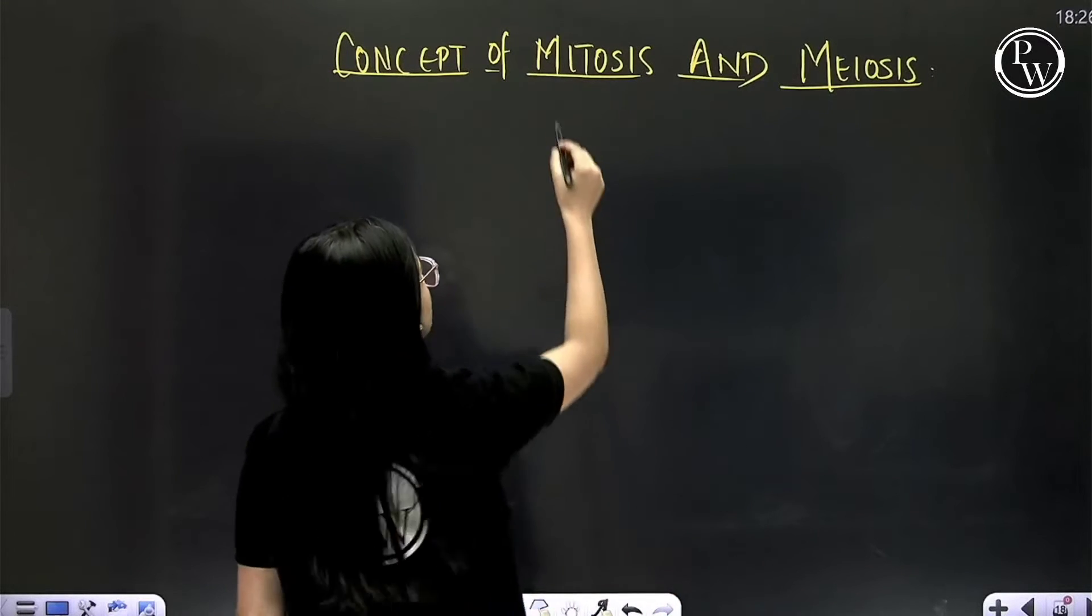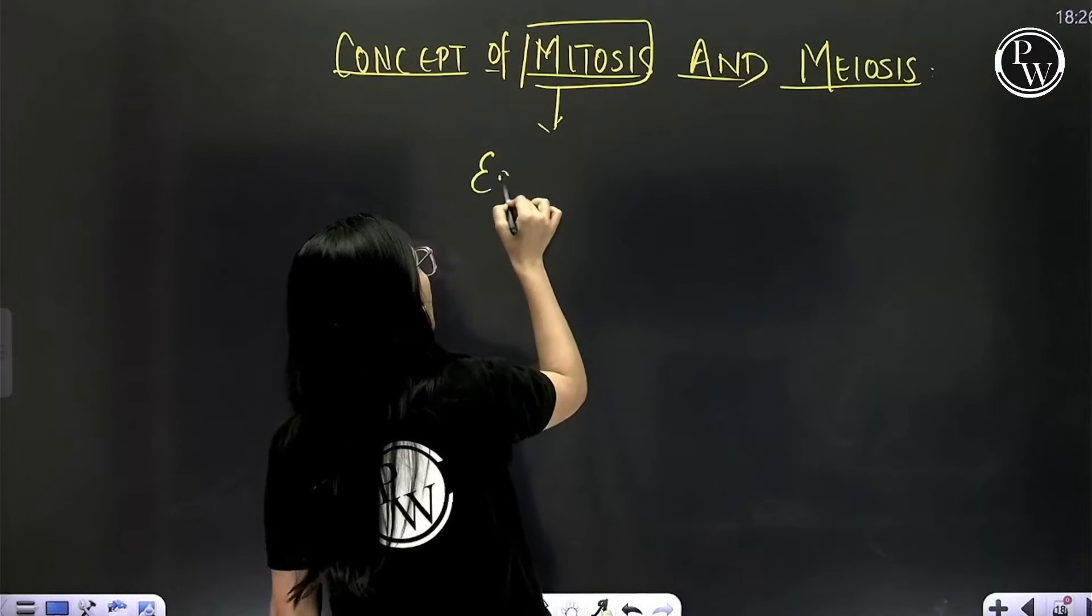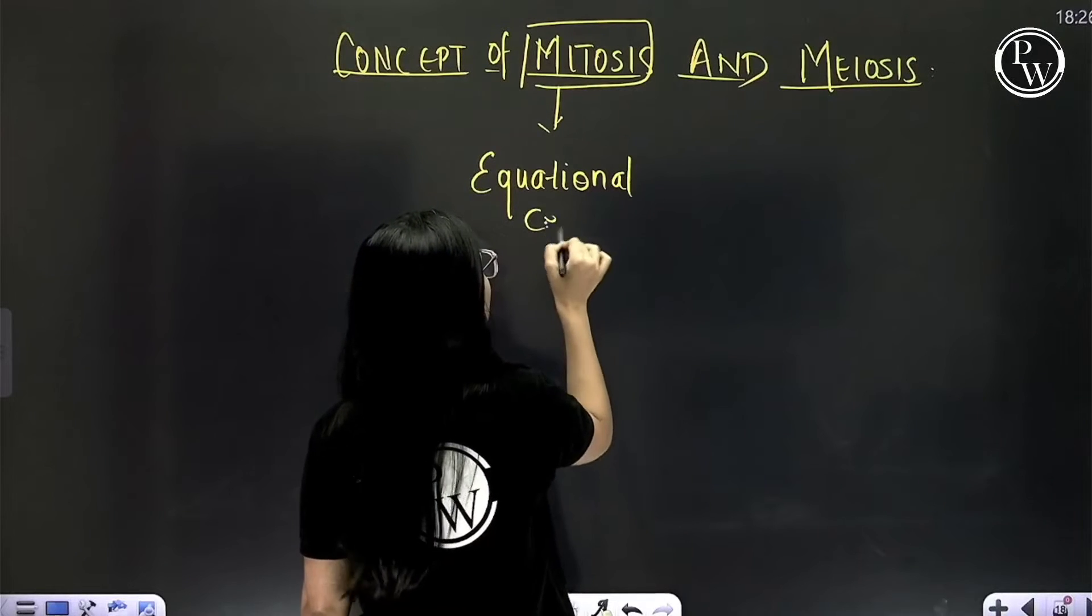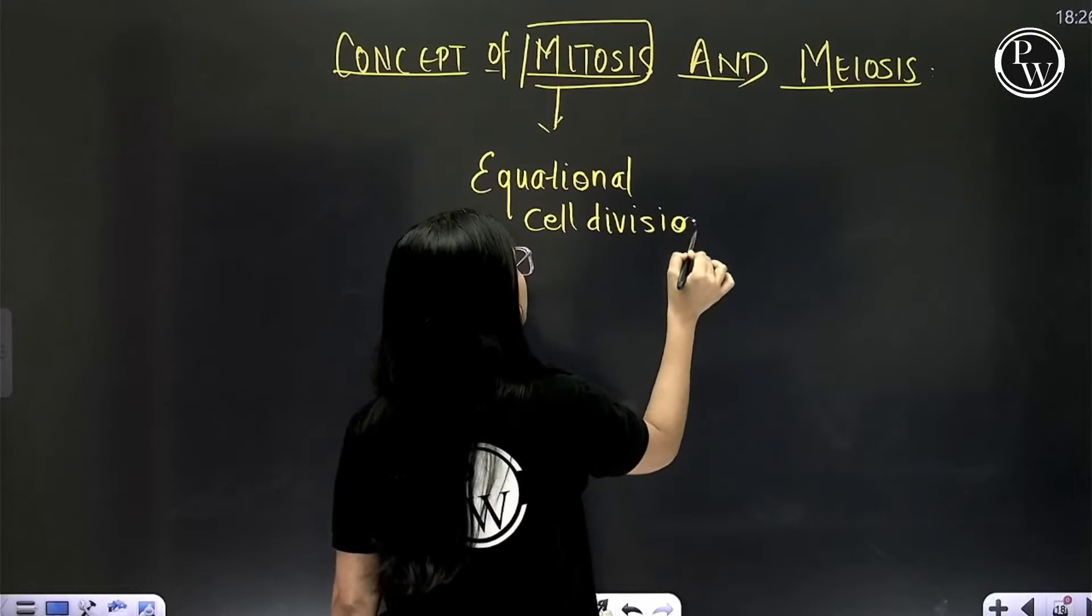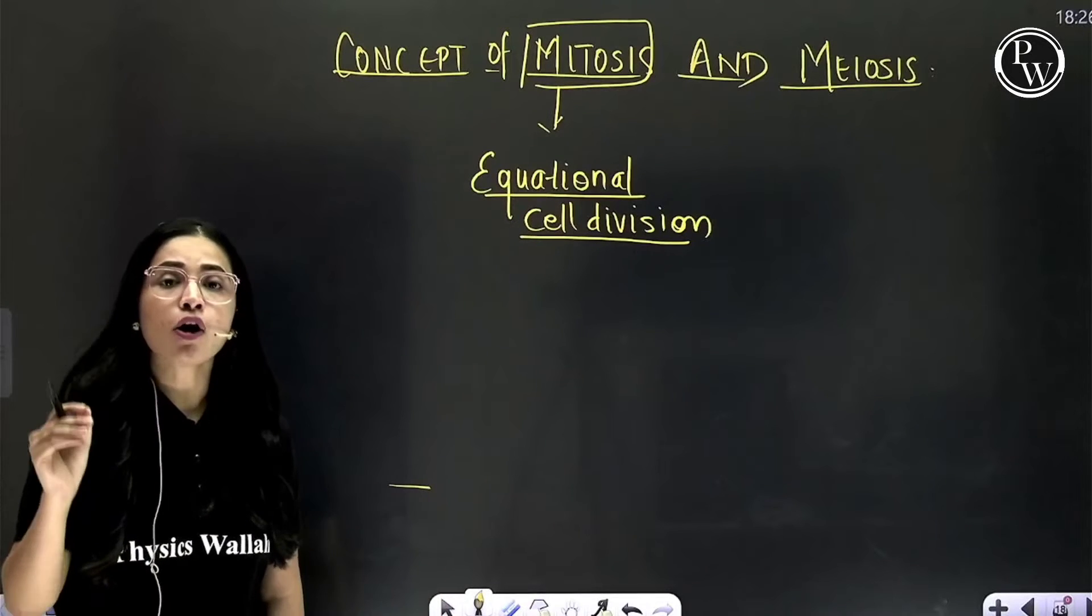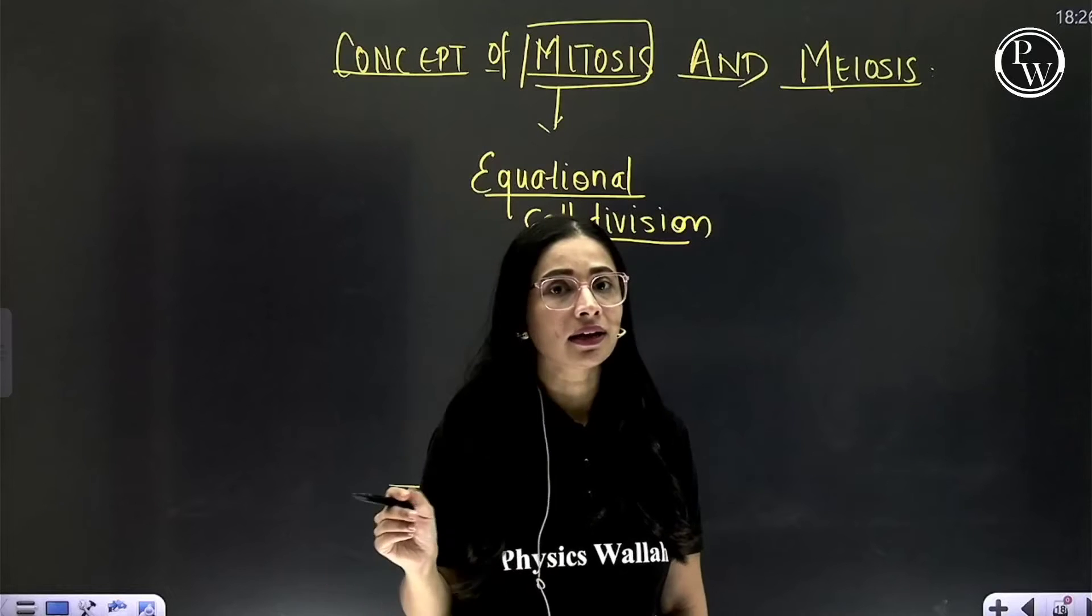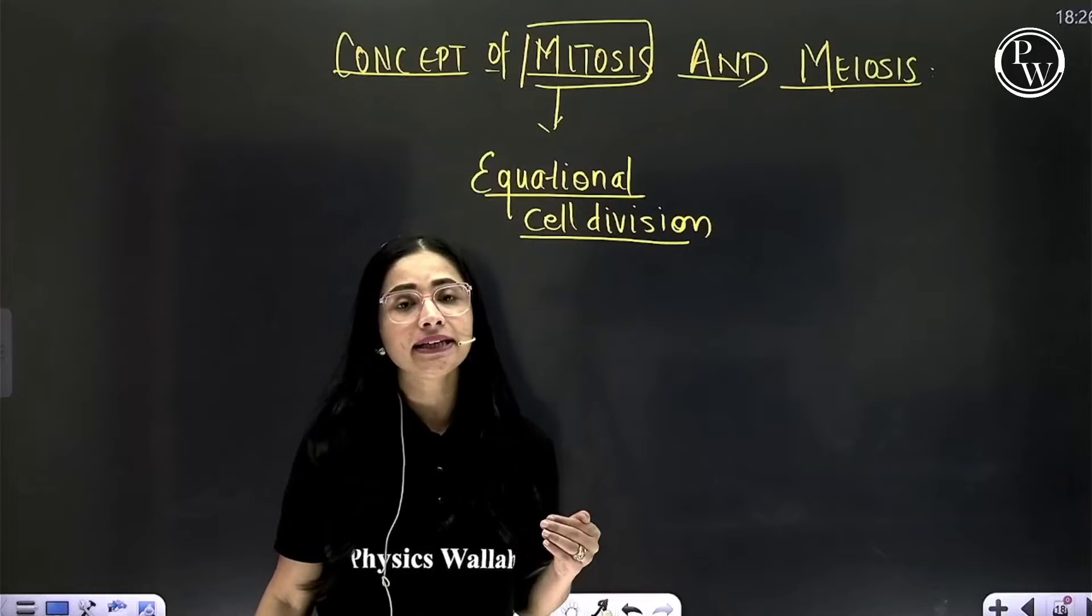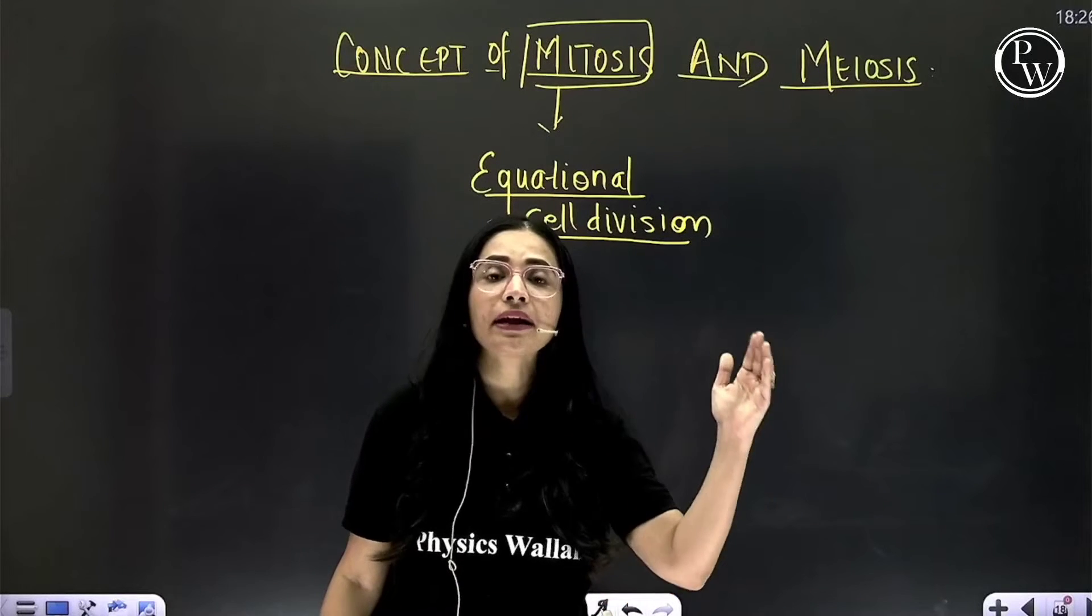What is mitosis? Mitosis is also known as equational cell division. Why is it known as equational cell division? Because the number of chromosomes as well as the amount of DNA received by the daughter cell at the end of complete division is same as that of the parent cell.